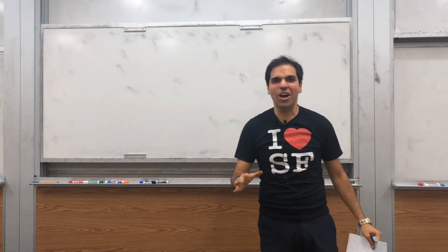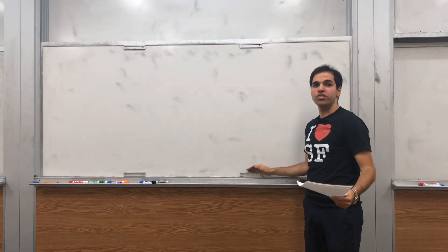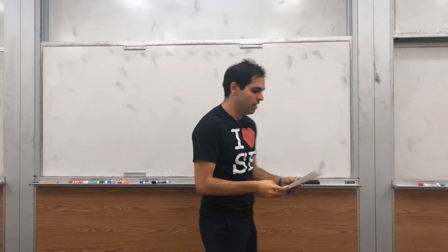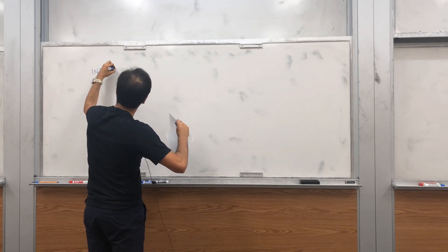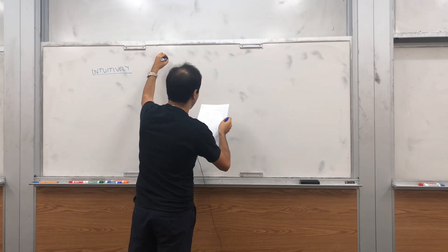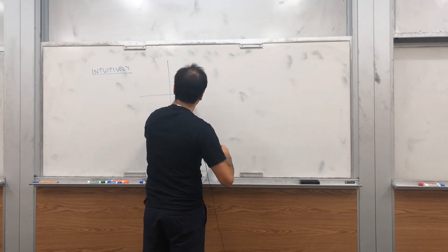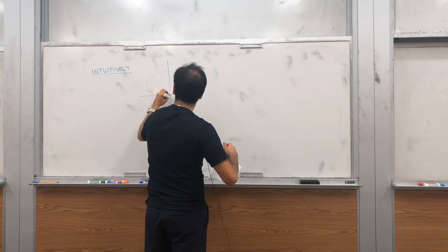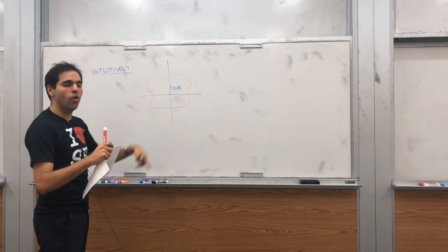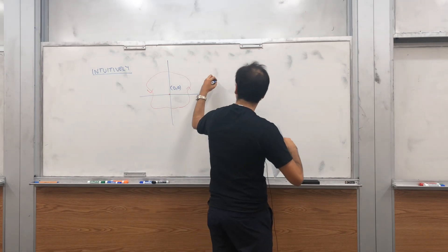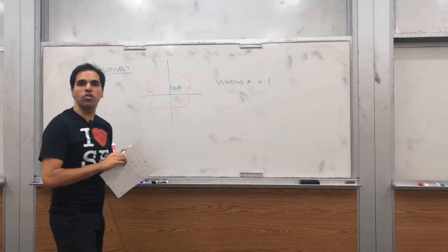Thanks for watching. Today I would like to talk about the winding number of a curve, which intuitively measures how much the curve rotates about a point. I think it's easiest to explain with a picture. Suppose we have a circle or some weird curve — it starts like that and goes like that. Intuitively, this curve rotates around the origin (zero, zero) only once. So we would like to define a winding number such that the winding number of this curve is one.